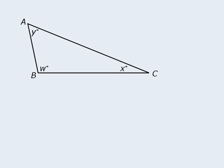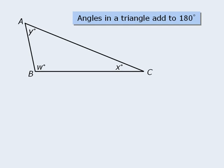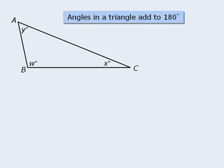Triangles also have three interior angles, and an important feature here is that the three angles in a triangle will always add to 180 degrees. So in this particular triangle, we know that w plus x plus y must equal 180. This means that if we know the measurements of two angles in a triangle, we can always find the third angle.